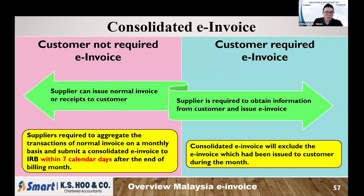When you consolidate the e-invoice, make sure those already-issued individual e-invoices are not included in the consolidated e-invoice. Because some customers already required an e-invoice — those are excluded here. Only the normal invoices are included in the consolidated e-invoice. The already-issued individual e-invoices are left as-is. Then both combined together will form the total sales for that month.